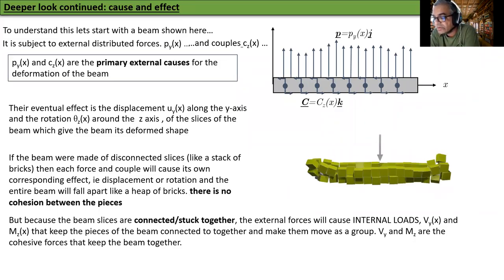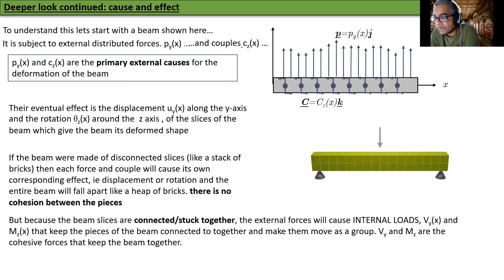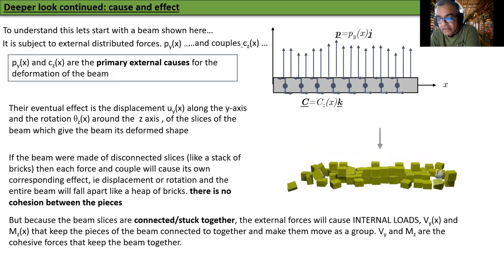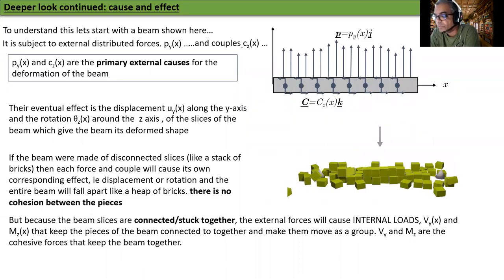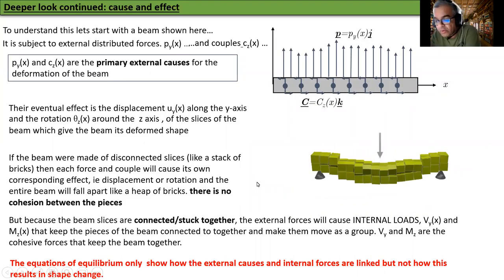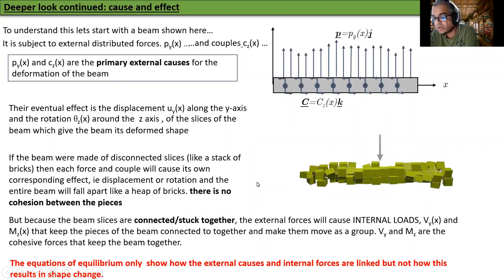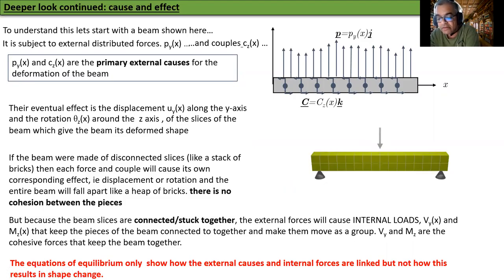But because the beam slices are connected or stuck together, the external forces will cause internal loads VY of X and MZ of X that keep the pieces of the beam connected together and make them move as a group. VY and MZ are the cohesive forces that keep the beam together. The equations of equilibrium only show how the external causes and internal forces are linked, but not how this results in shape change.